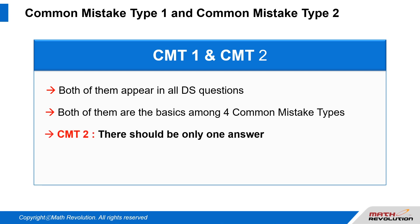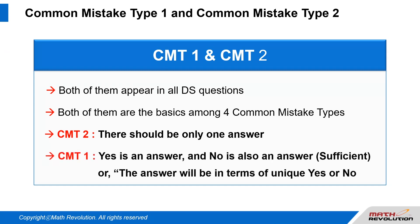Common Mistake Type 2, or CMT2 — there should only be one answer. Common Mistake Type 1, or CMT1 — yes is an answer, and no is also an answer, or sufficient; the answer will be in terms of a unique yes or no.